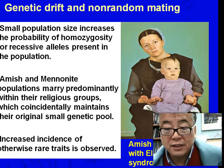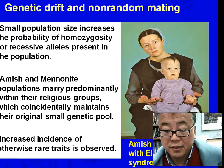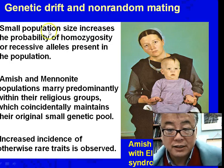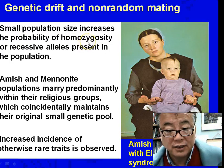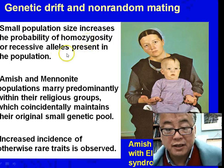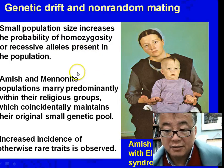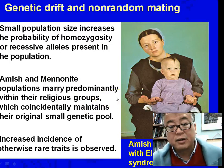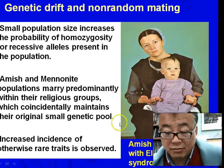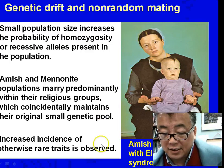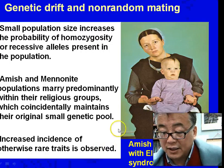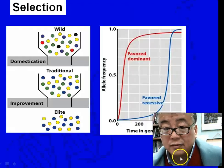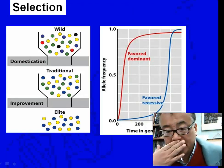Genetic drift and non-random mating can lead to human medical conditions. Small population size increases the probability of homozygosity, leading to inbreeding depression for recessive alleles. In the Amish and Mennonite populations, when individuals marry predominantly within their own group, it leads to an increased incidence of recessive conditions known as Ellis-van Creveld syndrome. Selection also plays a part.